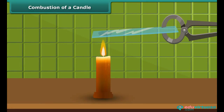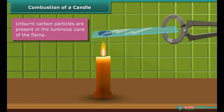Rohan introduces a glass plate into the luminous zone of the candle flame with the help of a pair of tongs. The glass forms circular blackish spots, indicating the presence of unburnt carbon particles present in the luminous zone of the flame.